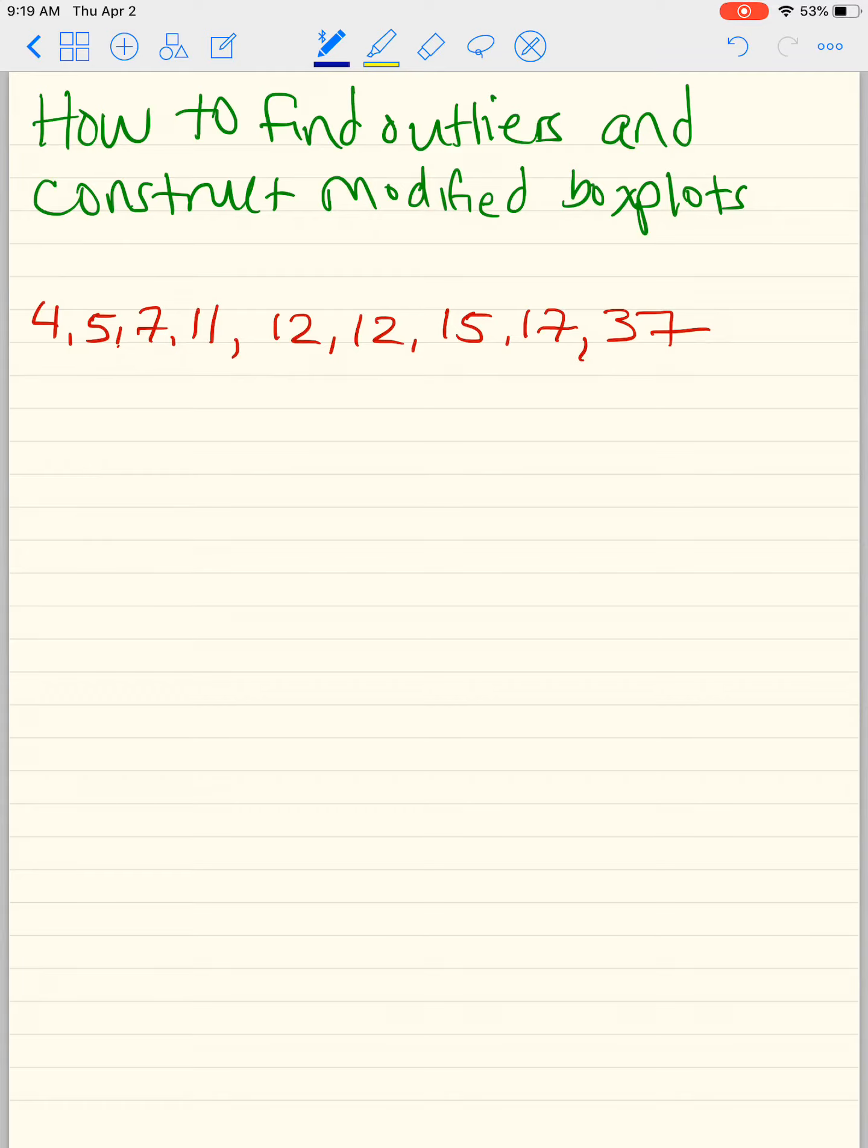From our past video, we've seen that box plots are usually associated with a five-number summary. We have the minimum number to be 4, and we have the maximum number to be 37. Now we need the median. So currently, there are nine numbers here. If you recall, the median is found by the number of data points plus 1 divided by 2.